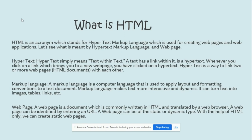HTML is a way to link pages on the internet — it is a text that has a link within it. When we click on a link, we are taken to a new web page. You are also familiar with hyperlinks, so it is just like a hyperlink. Whenever you click on a link which brings you to a new web page, we have clicked on hypertext. Hypertext is a way to link two or more webpages, external documents, and other webpages.